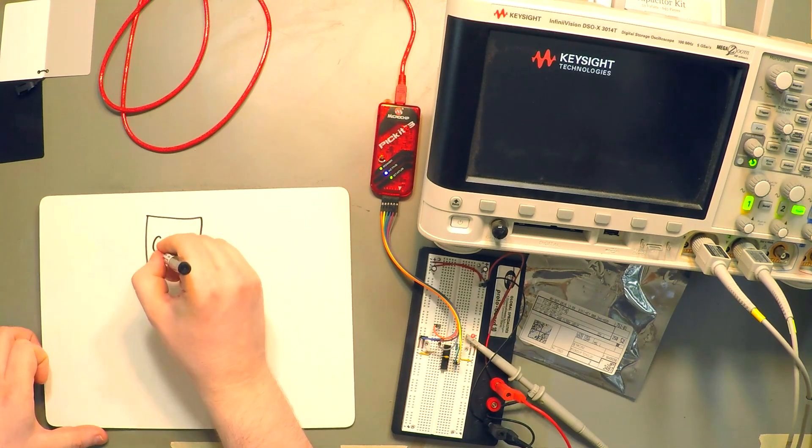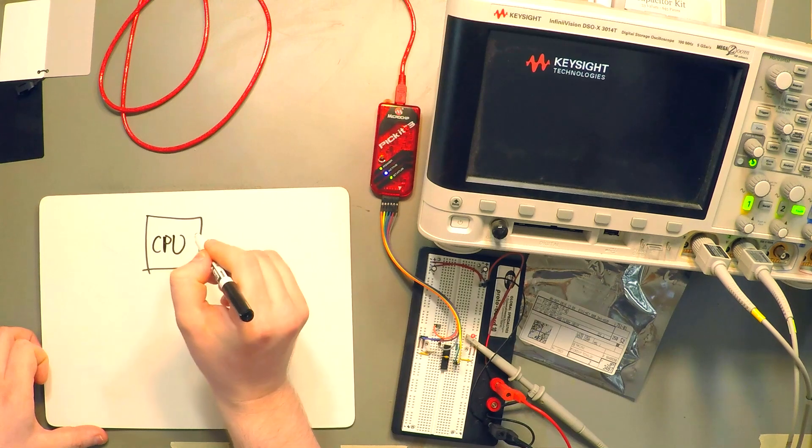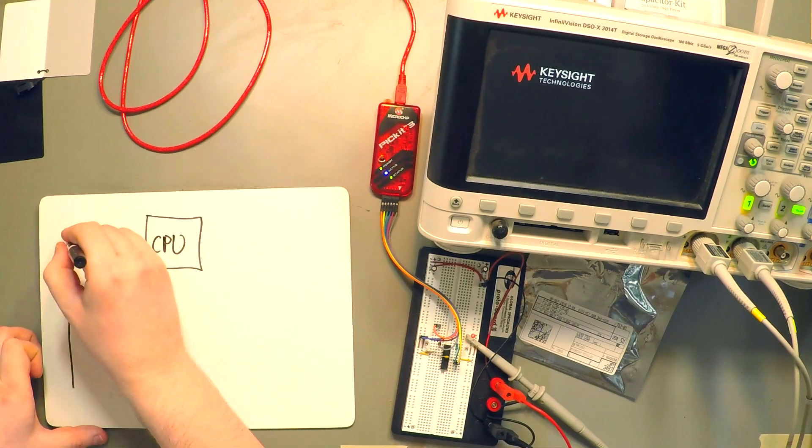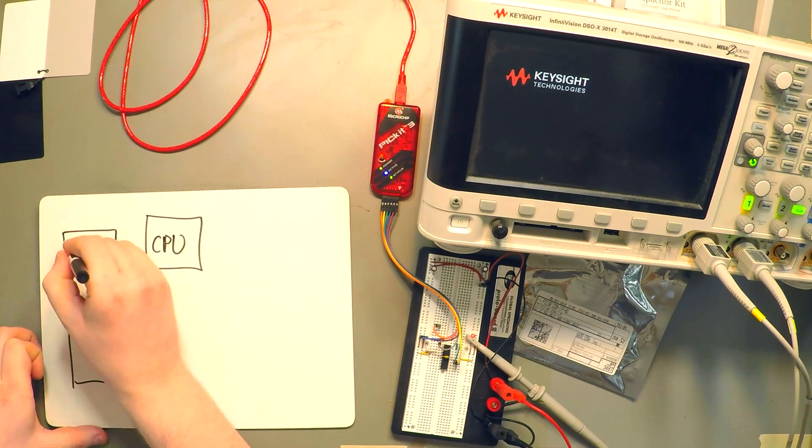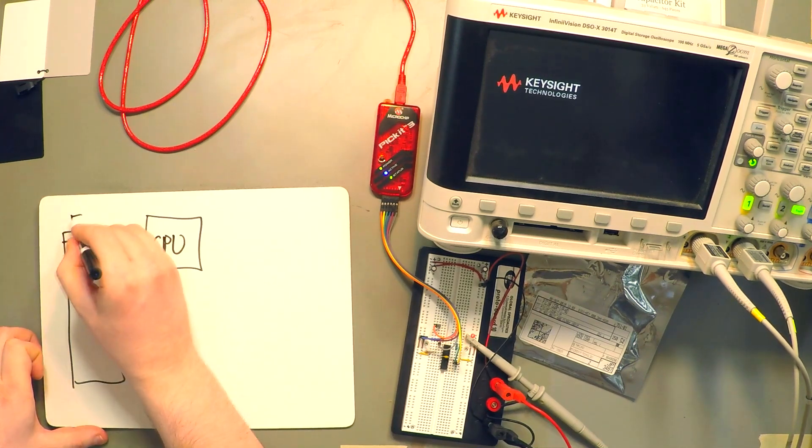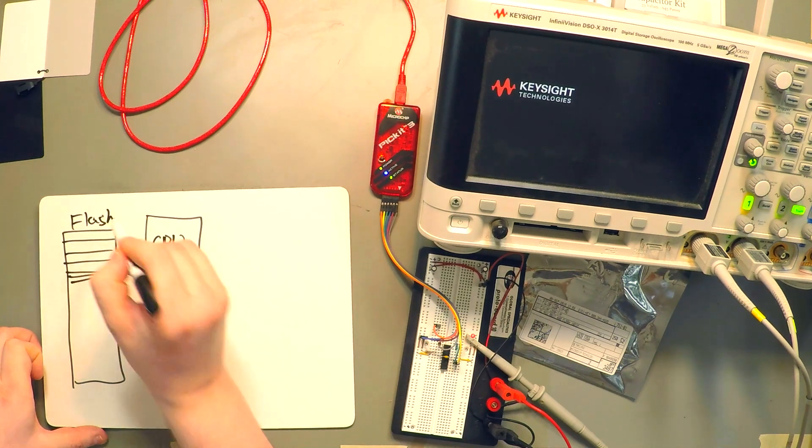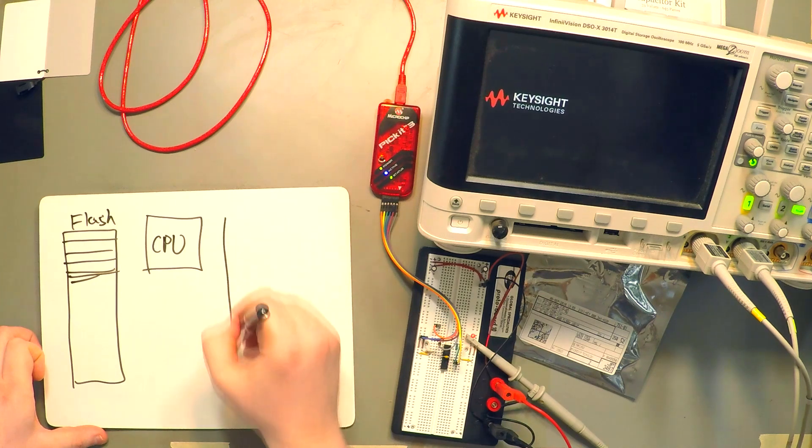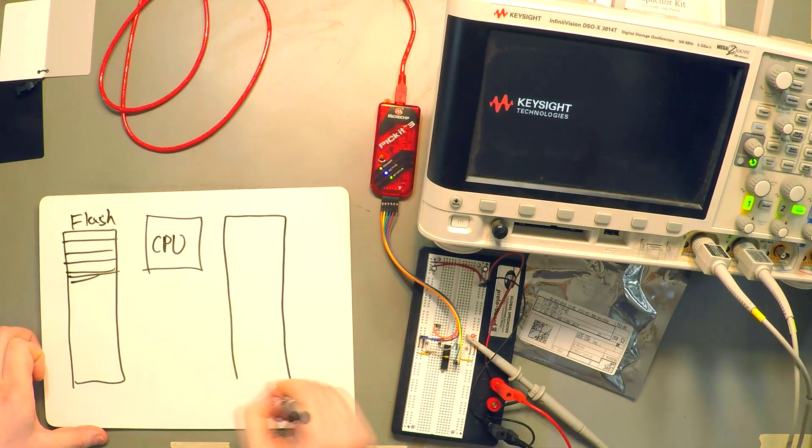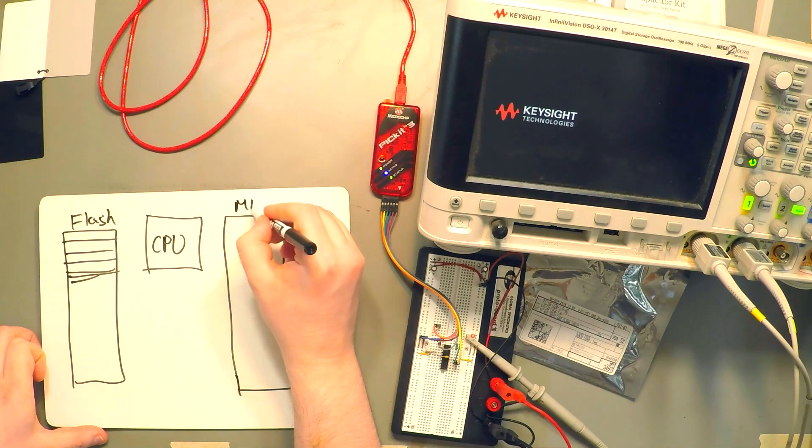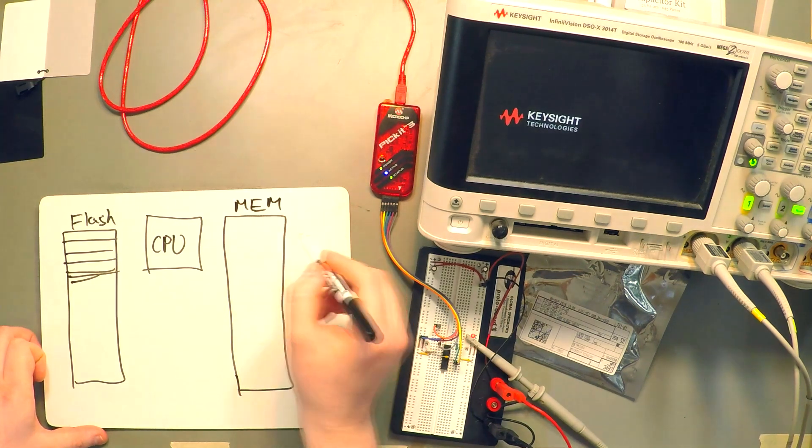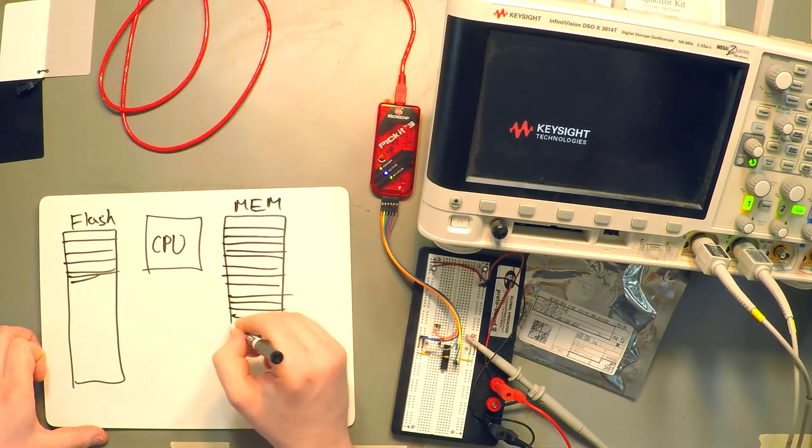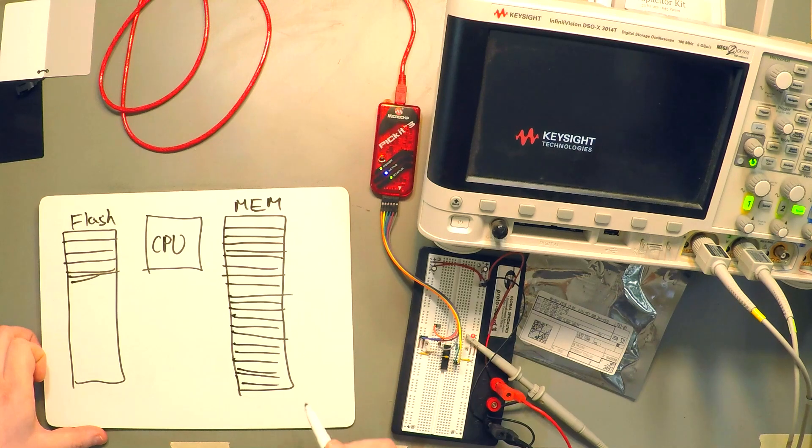we can instead look at it as there being a CPU and it having access to a bank of flash memory right here, flash memory which is going to hold all the instructions for the CPU and we're also going to have access from the CPU to a second bank of memory which will actually represent all other peripherals on the microcontroller.